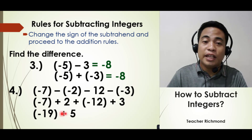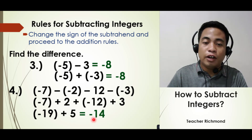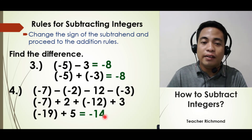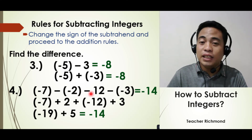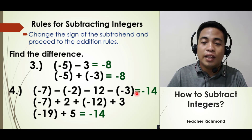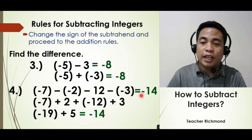Get the difference of 19 and 5, which is 14. The sign of the answer is negative because the integer with the greater absolute value is 19 and it is negative. Therefore the final answer for negative 7 minus negative 2 minus positive 12 minus negative 3 is negative 14.